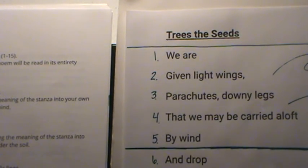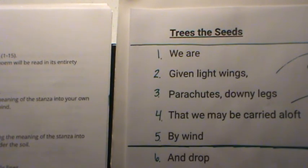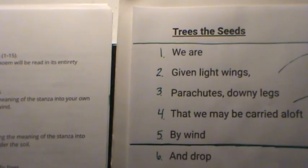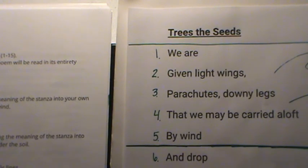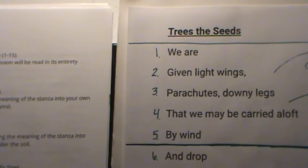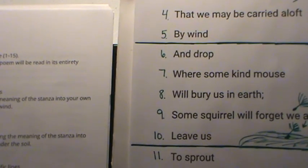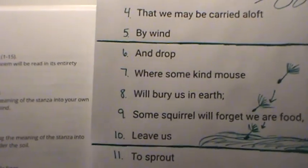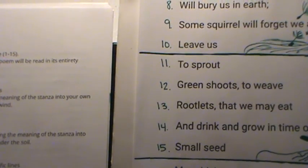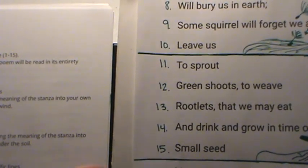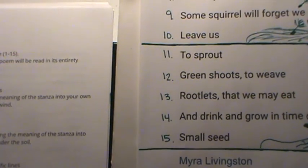We are going to read this poem through once. If you need to pause and read it through a couple more times, that is fine. Trees the Seeds: We are given light wings, parachutes, downy legs that we may be carried aloft by wind. And drop where some kind mouse will bury us in earth. Some squirrel will forget we are food, leave us. To sprout green shoots, to weave rootlets, that we may eat and drink and grow in time our own small seed. Myra Livingston.